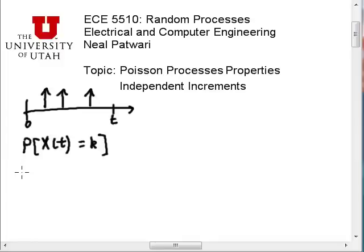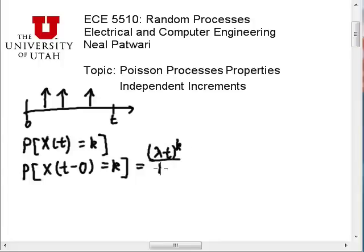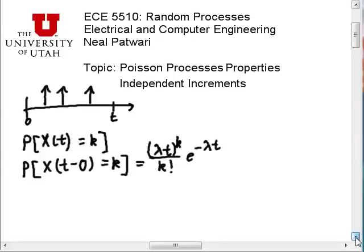Well, we wrote the PMF, but what I want to say is that we could also write this as follows, and this is being more explicit about what time interval we're interested in. I'm going to write it as X(t minus zero) equals k. And that's being more explicit about when I started and when I stopped the clock, when I started counting and when I stopped counting. And of course, because t minus zero is still t, this is still going to have the same PMF, the PMF being lambda t to the k divided by k factorial times e to the minus lambda t.